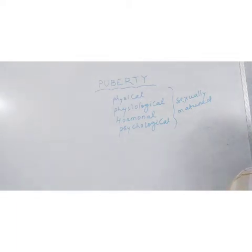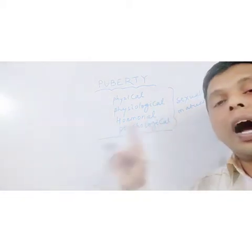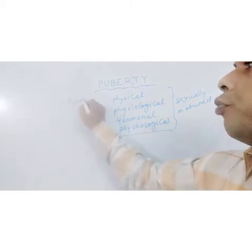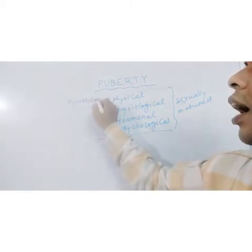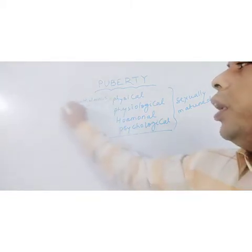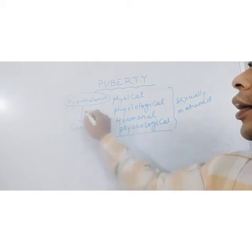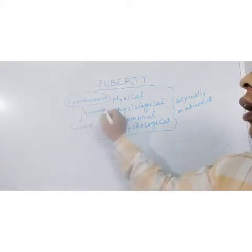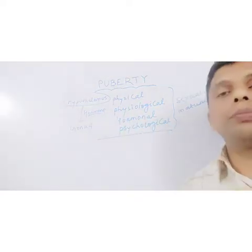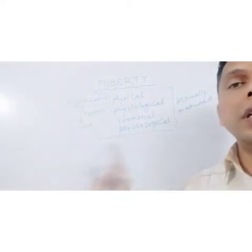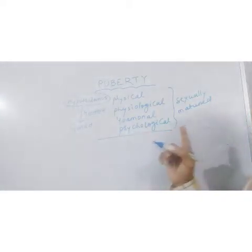The whole process is initiated by hormonal signals. The whole events of changes are regulated by the brain, that is the hypothalamus. Hypothalamus provides signals to the gonads by different hormones. Today we will be discussing about various categories of hormones and their role in the process of puberty.